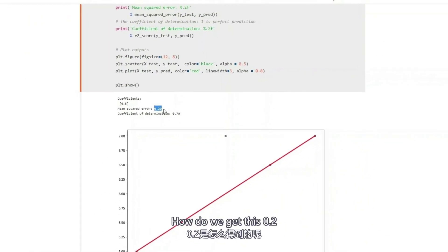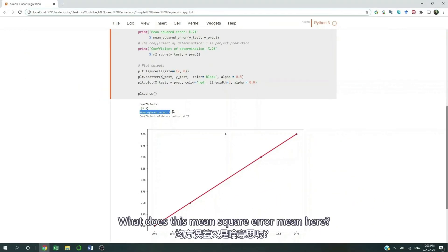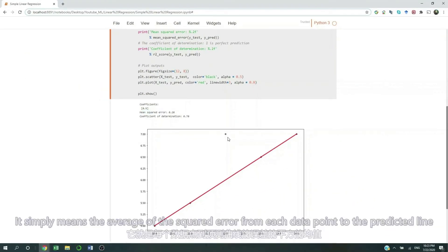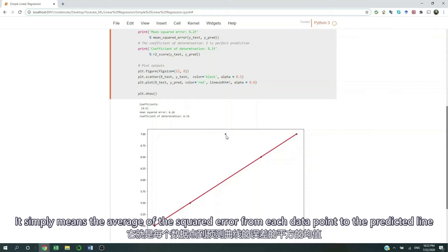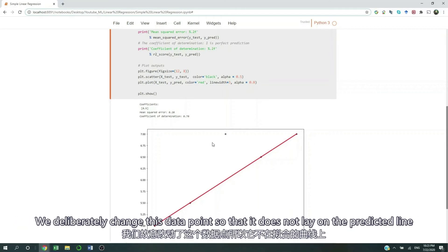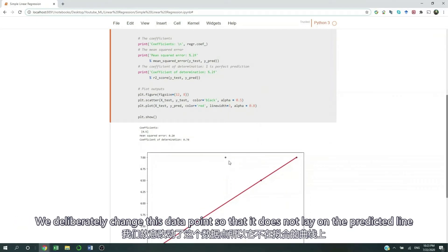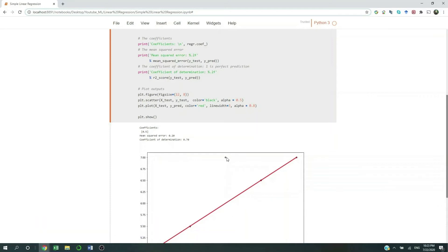So how do we get this 0.2? What does this mean square error mean here? It simply means the average of the squared error from each data point to the predicted line. So here, as you can see, we deliberately changed a data point so that it does not lay on the predicted line. The difference between this data point, which is 7, and our predicted line is 1.